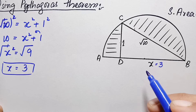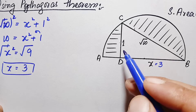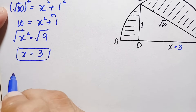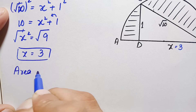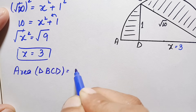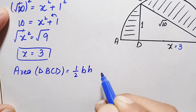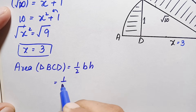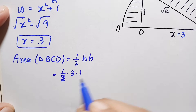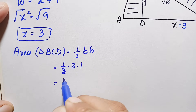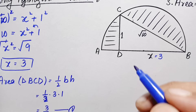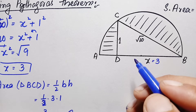Now we find the area of triangle BCD. We need the base and the height. The height is 1 unit and the base is x, which is 3 units. Therefore, the area of right angle triangle BCD equals one-half times base times height, which is one-half times 3 times 1, giving us 3/2. This is equation number one.